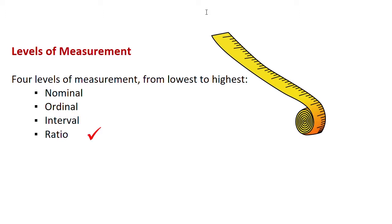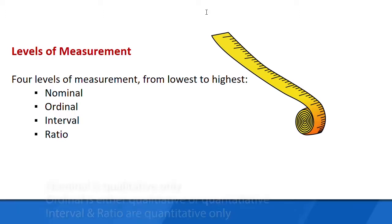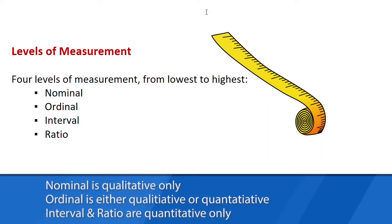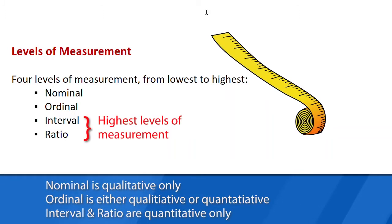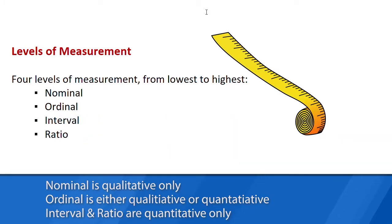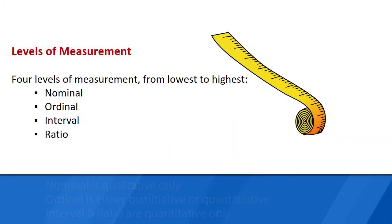Nominal level of measurement is qualitative only. Ordinal can be either qualitative or quantitative. Interval and ratio are quantitative only.